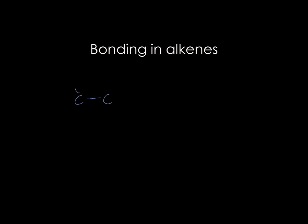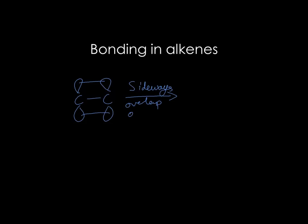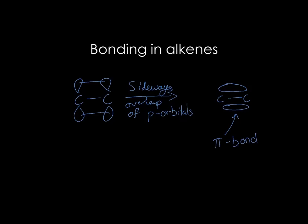This comes about because each carbon has an unbonded p orbital with an electron in it. These p orbitals overlap sideways — a sideways overlap of p orbitals — and this forms a pi bond above and below the plane of the carbon atoms. This region is the pi bond, while the direct overlap in between the carbon atoms is the sigma bond.